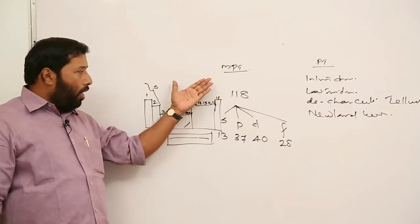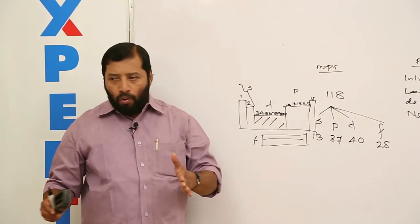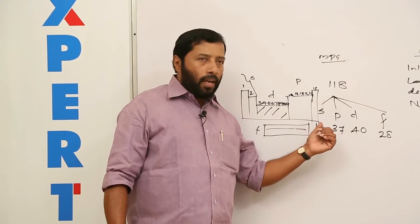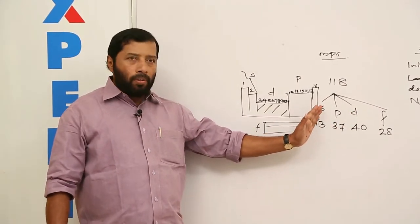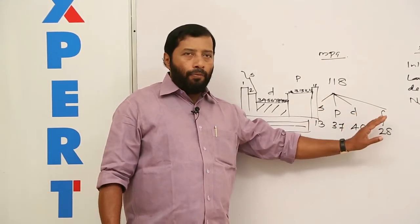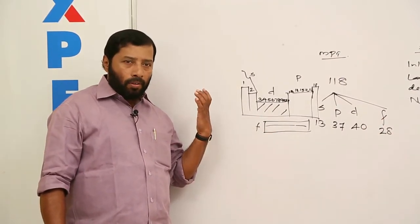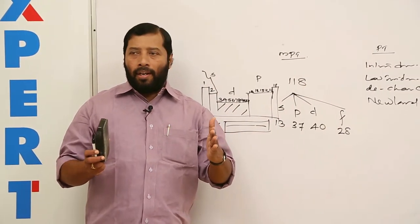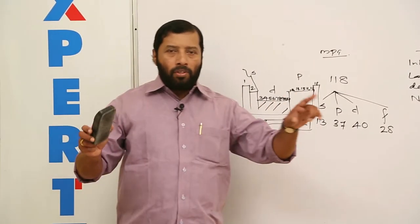Back to the modern periodic table: a total of 118 elements categorized into 4 blocks — S (sharp), P (principal), D (diffuse), F (fundamental). 13 members in S block, 37 in P, 40 in D, and 28 in F. The left extreme of the main body is covered by S block, the right portion by P block, D block is in between, and F block is a body separated from the main body of the table.